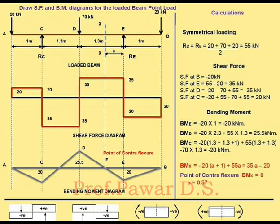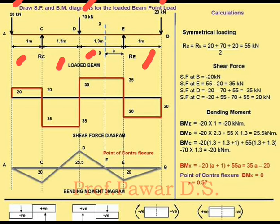This is the beam. The beam has point loads: 20kN, 70kN, and 20kN, with distances of 1 meter, 1.3 meters, 1.3 meters, and 1 meter.